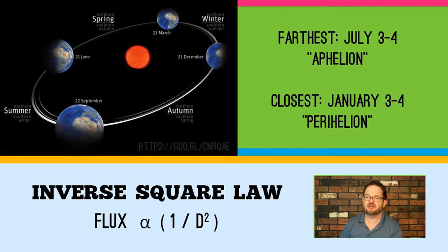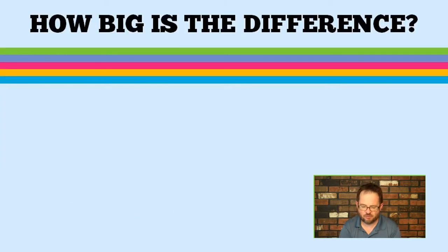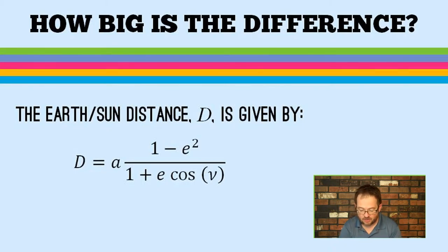We are closest to the sun on a date called perihelion, which falls roughly January 3rd or 4th depending on leap year and other factors. We are farthest from the sun around July 4th on a day called aphelion. We need an equation telling us the Earth-sun distance on any given day. Orbital mechanics gives us this: the Earth-sun distance is given by the symbol D, and it is a function of time — we need to know what day we're on.